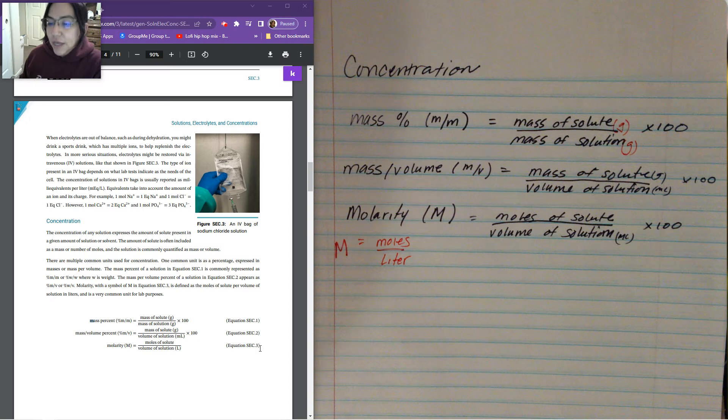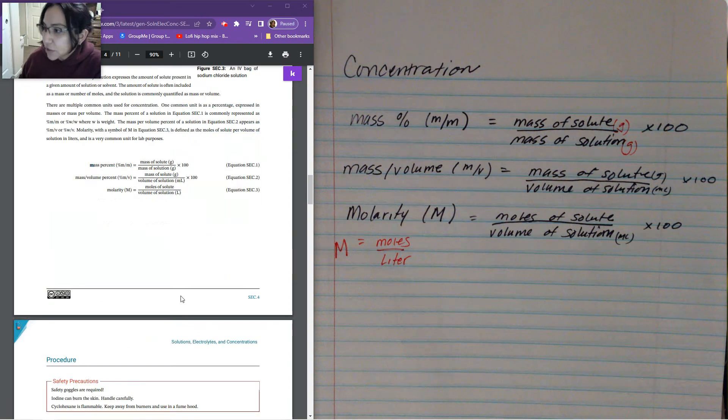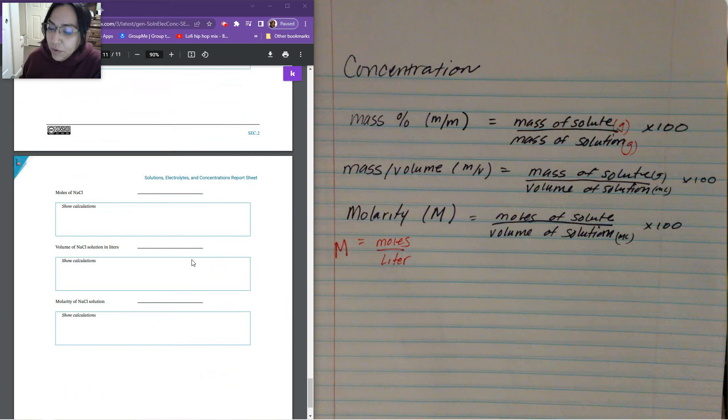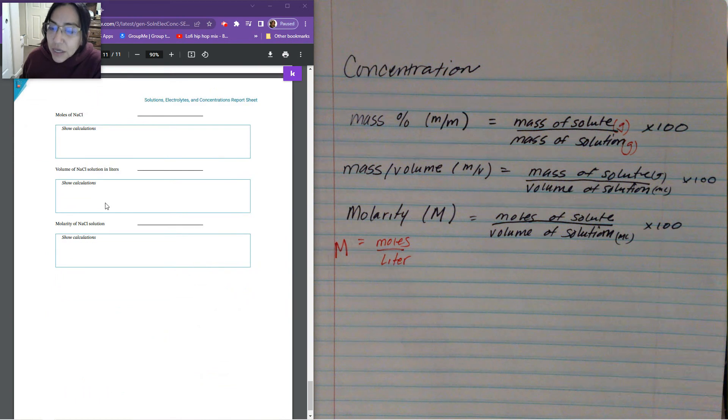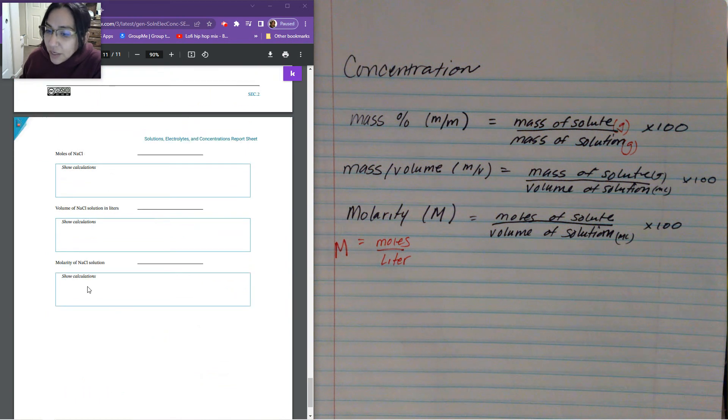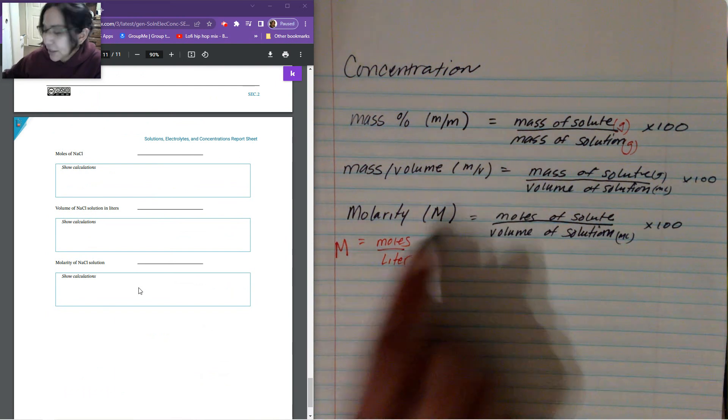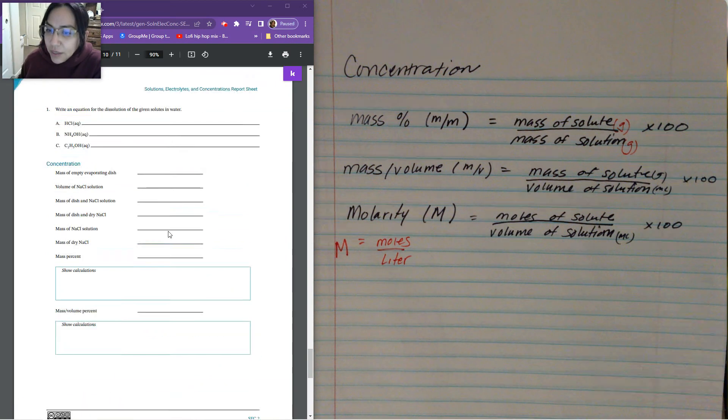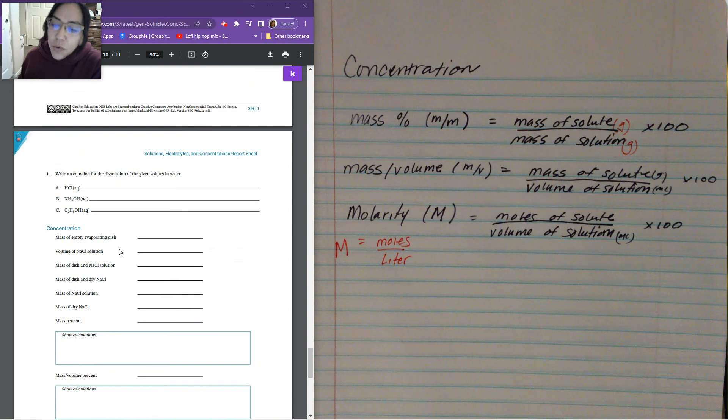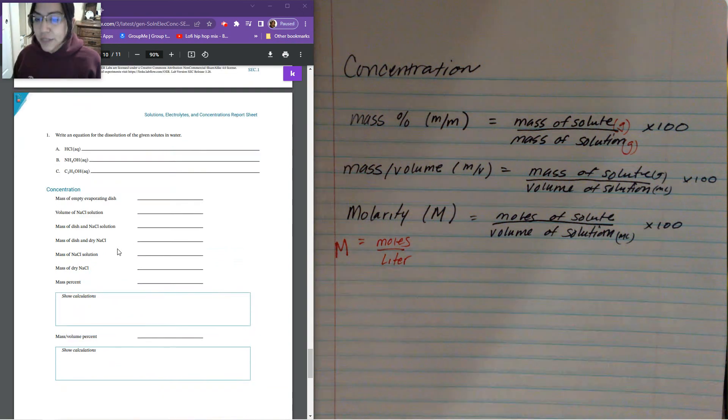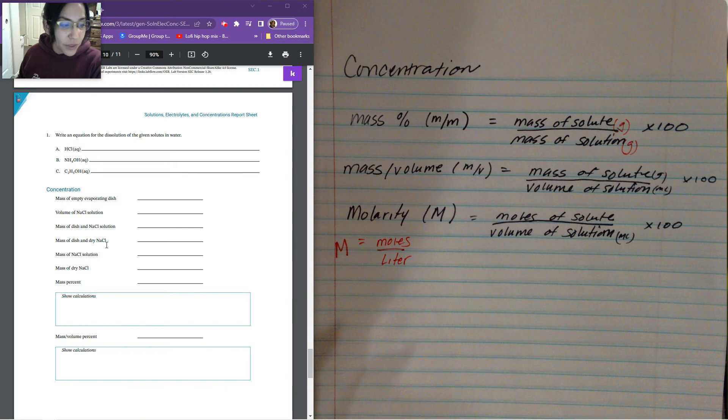So once you get all your data, you're going to be trying to place it all into these equations to find out whatever it is that it's asking us. You'll notice here that it wants molarity of your sodium chloride solution. So the final one is to get to here. So, like I said, in your lab, you're taking all your different information down, and you're writing all these different numbers.